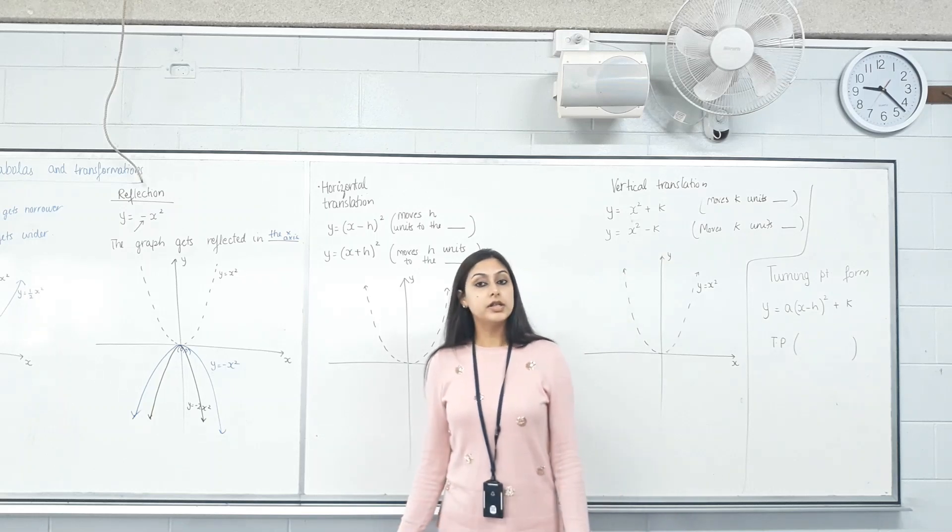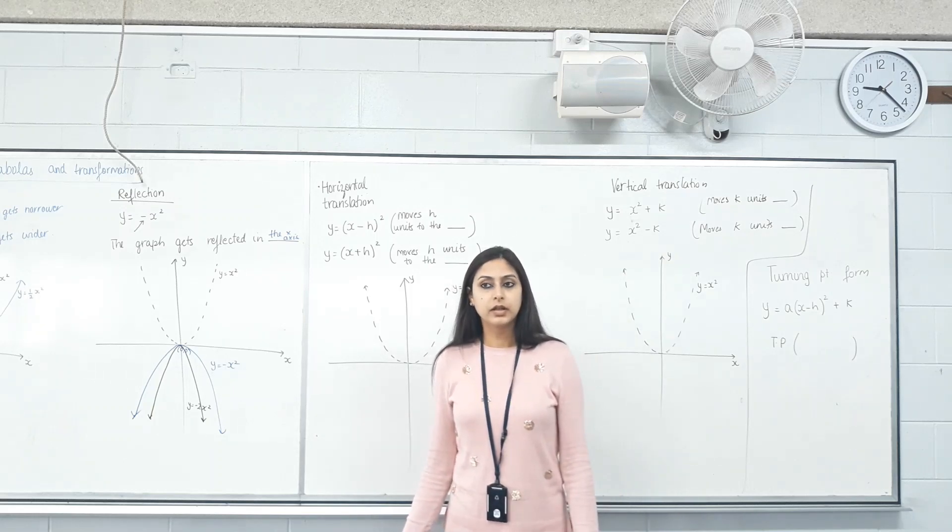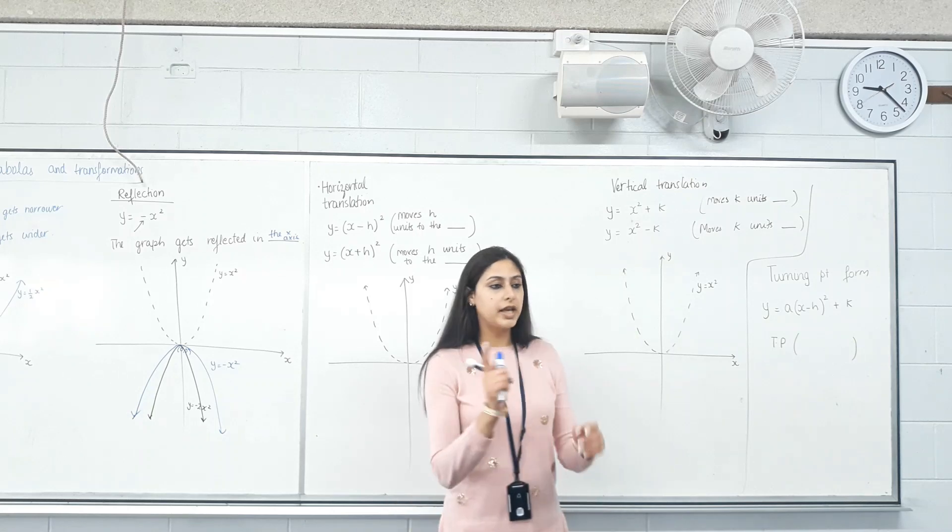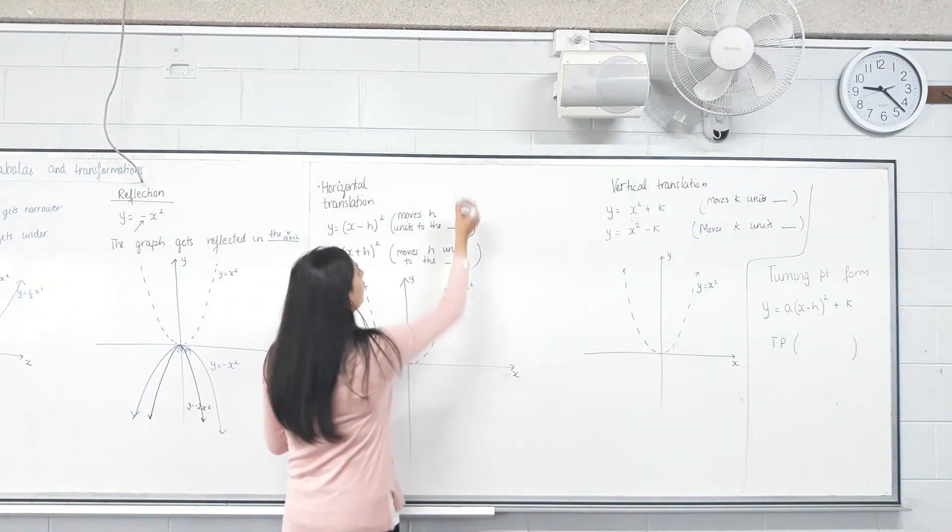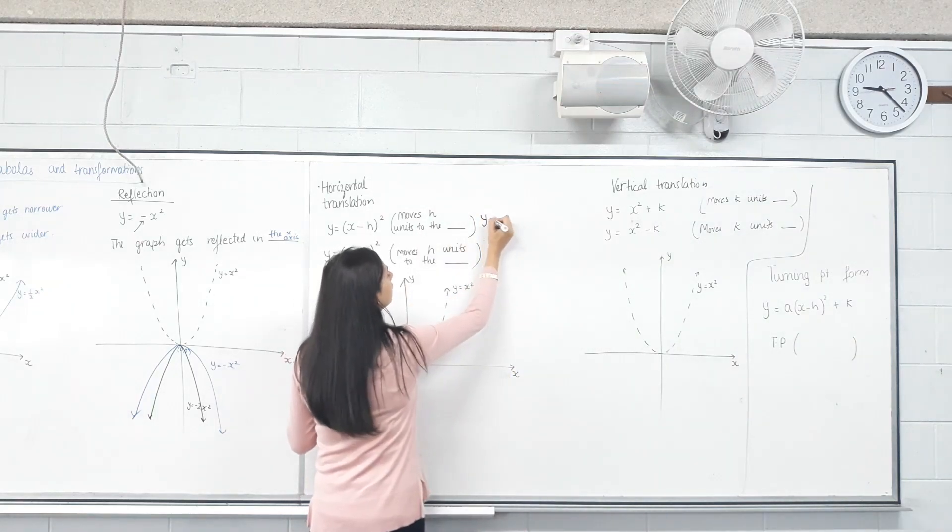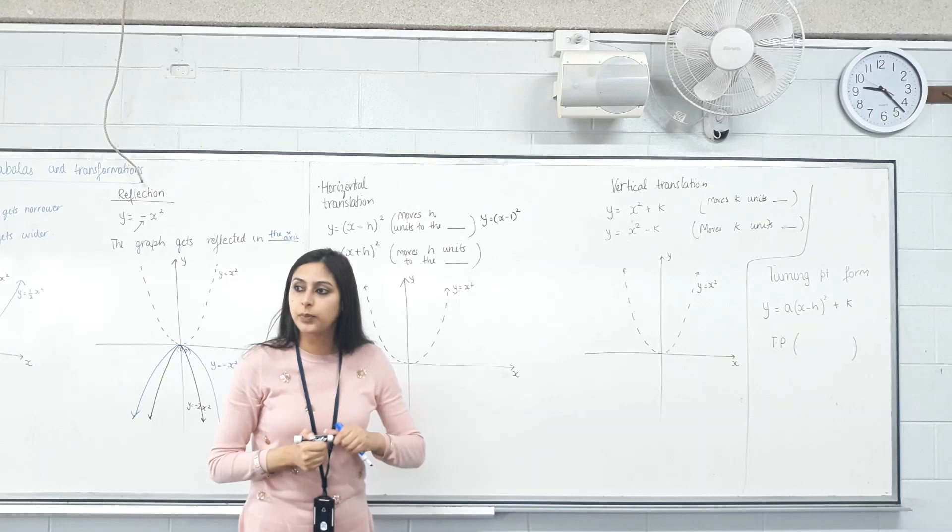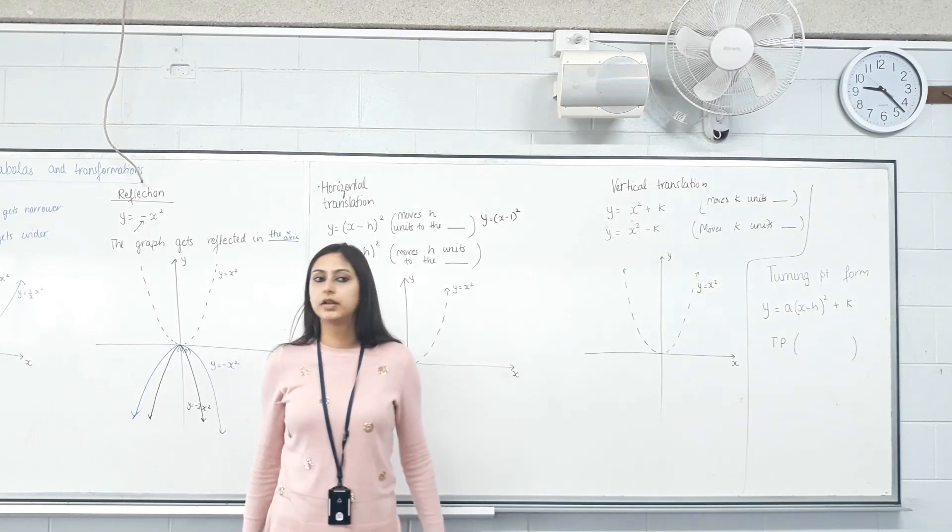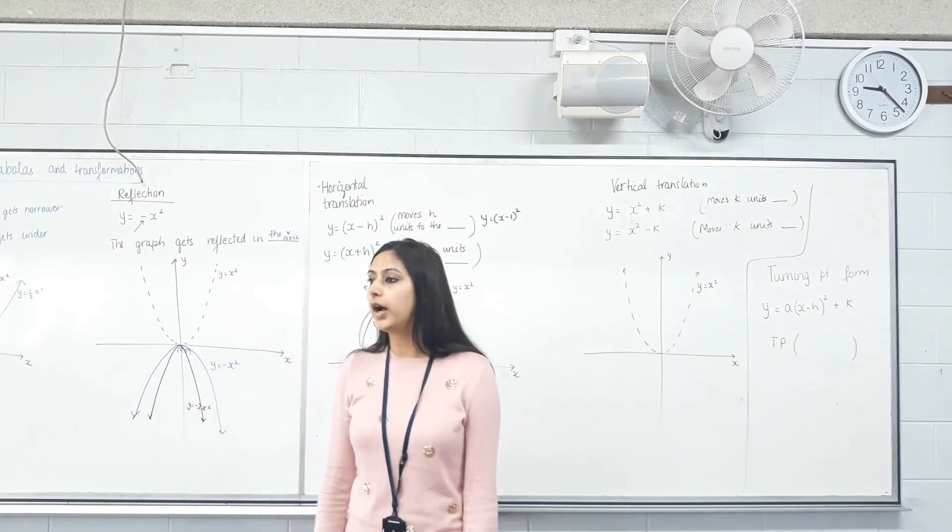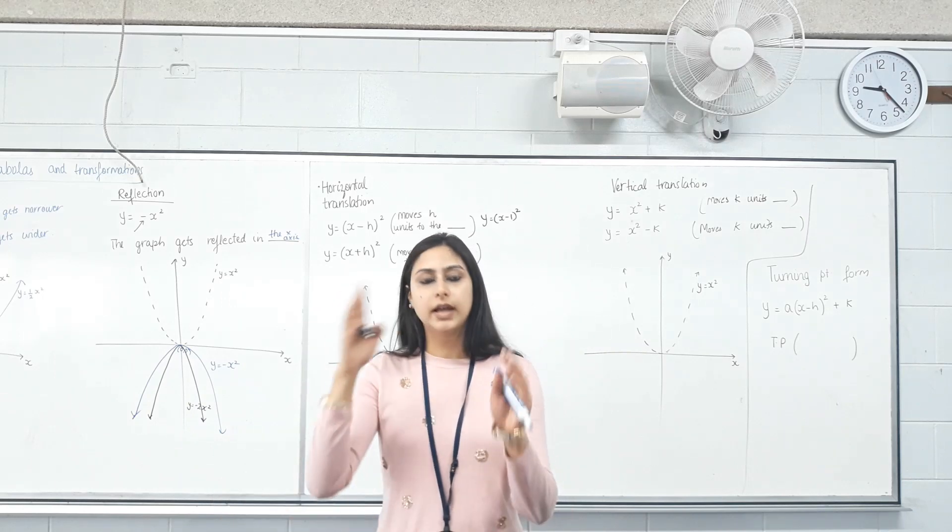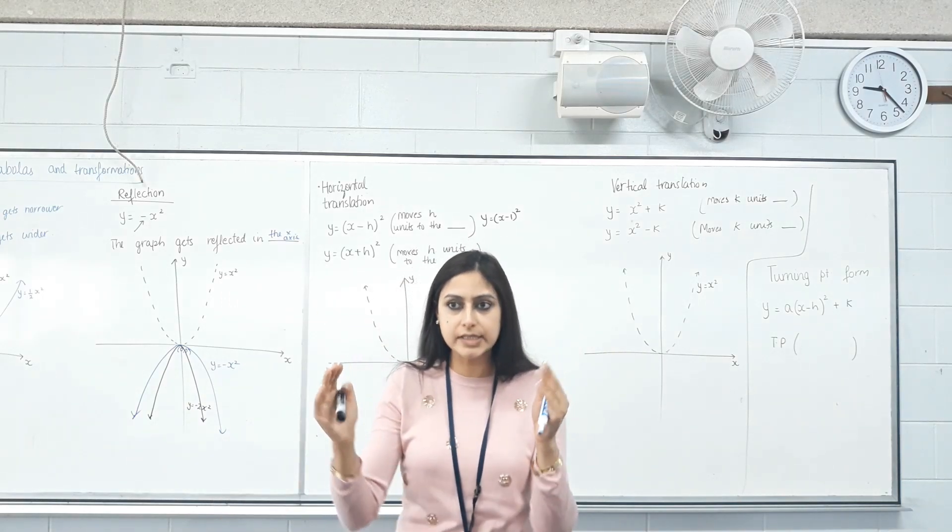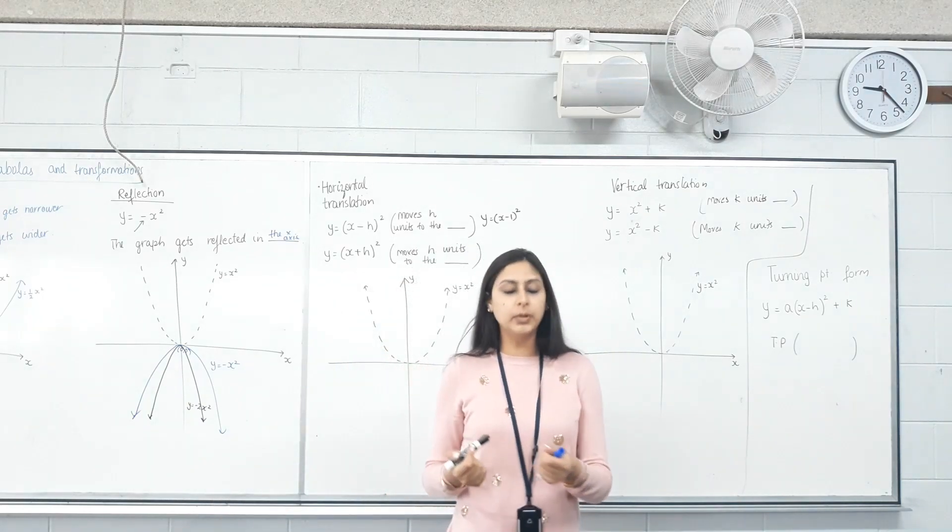Now listen carefully. I want you to sketch this exact thing: y equals (x minus 1) squared. So I'm subtracting the 1 first and then squaring it. Tell me what the CAS does.